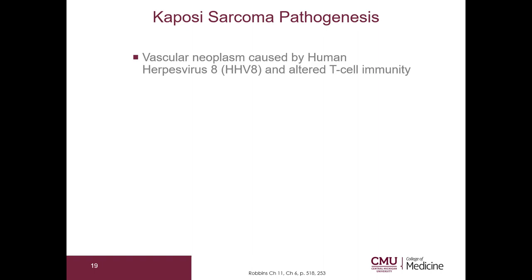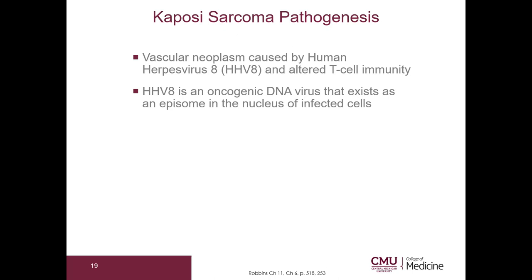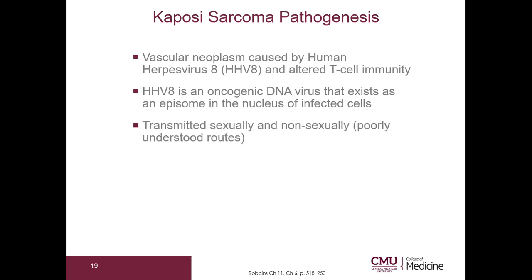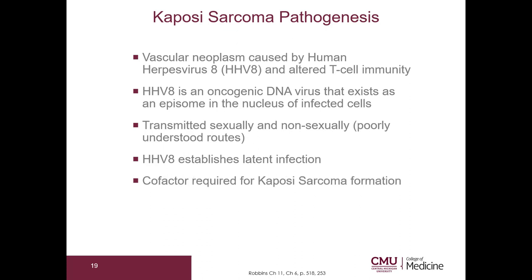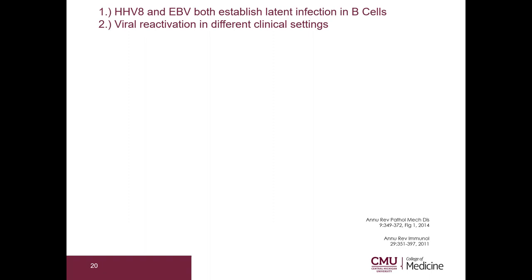Kaposi's sarcoma is caused by HHV-8 and altered T cell immunity. HHV-8 is an oncogenic DNA virus that exists as an episome in the nucleus of infected cells. This is transmitted both sexually and non-sexually, though these routes are poorly understood. HHV-8 establishes latent infection. A cofactor is required for Kaposi's sarcoma formation — HHV-8 infection alone is not enough. In AIDS, the cofactor is HIV. I will discuss latency and viral reactivation principles using both HHV-8 and EBV, as they share similar principles.